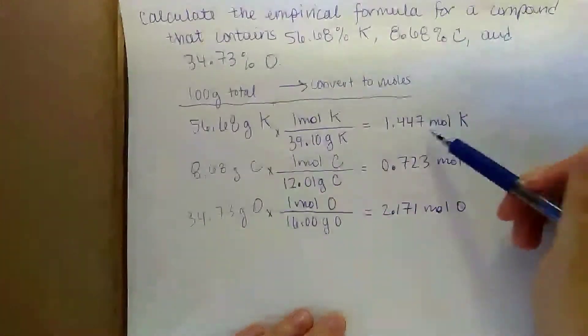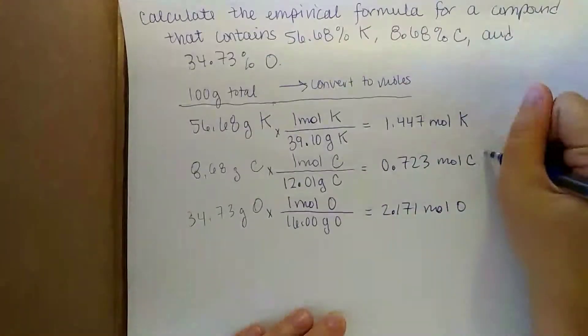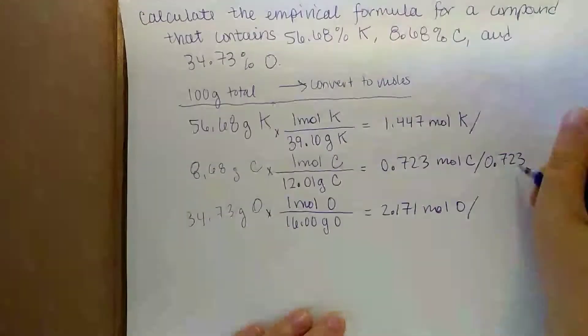So there's only 0.7 moles, whereas the potassium and the oxygen, there's more of them. So let's divide each one of these things by 0.723 moles.